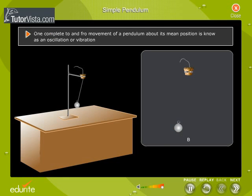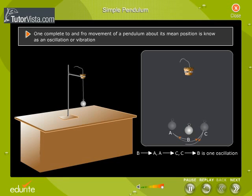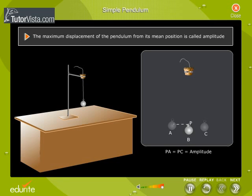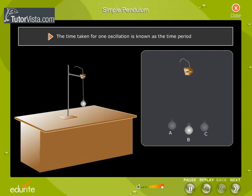One complete to and fro movement of a pendulum about its mean position is known as an oscillation or vibration. The maximum displacement of the pendulum from its mean position is called amplitude. The time taken for one oscillation is known as the time period.